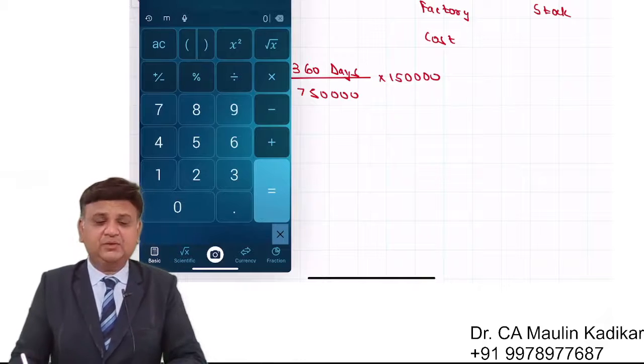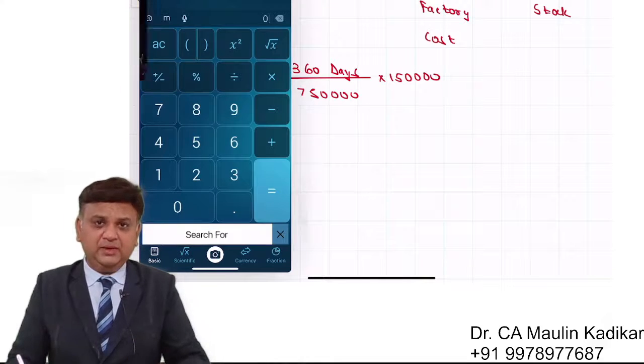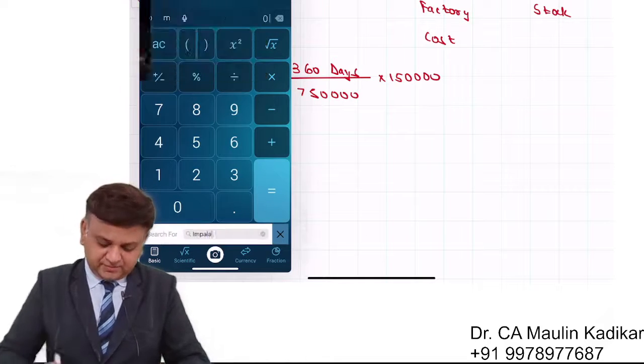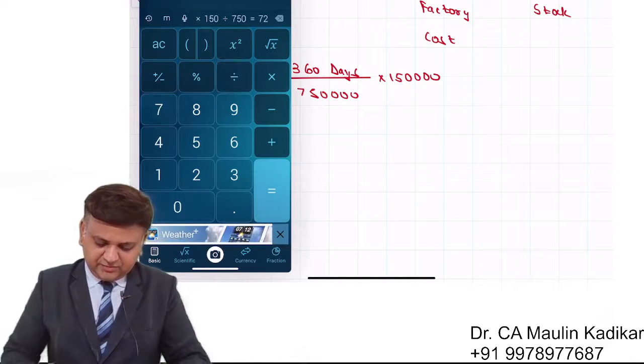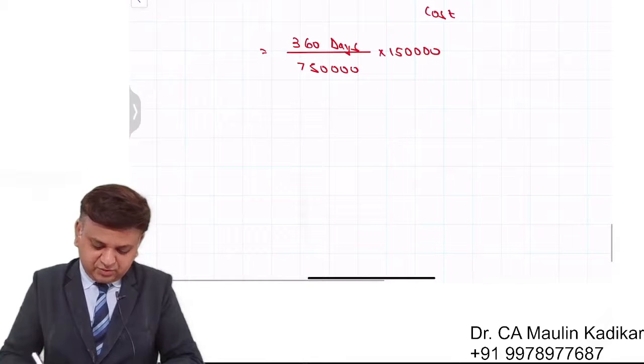This is the way we can make the calculation of WIP holding period, that is the production cycle. WIP holding period is equal to 360 into 150 upon 750, that comes to 72 days.